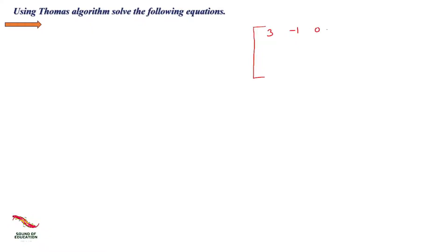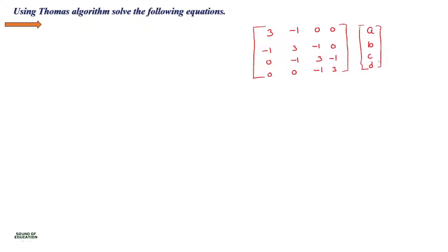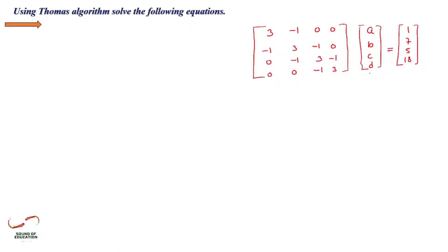The given 4x4 matrix is: [3, -1, 0, 0 / -1, 3, -1, 0 / 0, -1, 3, -1 / 0, 0, -1, 3]. Constants A, B, C, and D are given as 1, 7, 5, and 18 respectively. We have to calculate the values of A, B, C, and D.